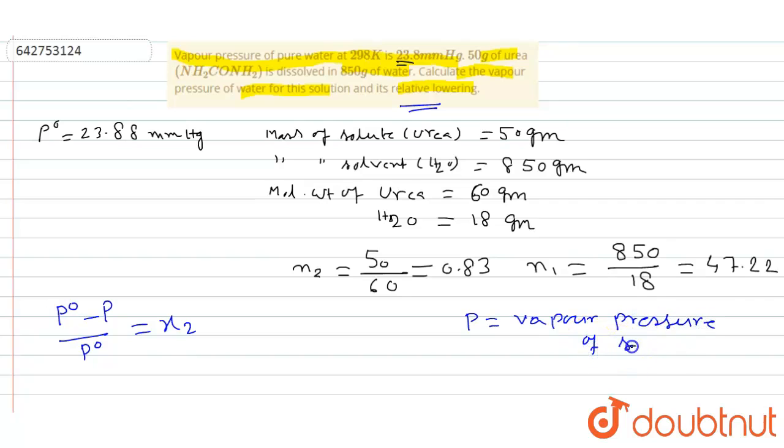of solution, and x₂ equal to n₂ by n₁ plus n₂, and we get n₂ equal to 0.83 and n₁